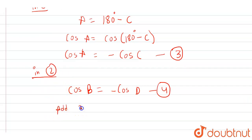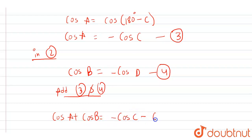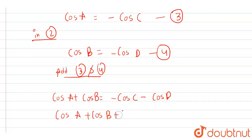Now let us add equation three and equation four. So on the LHS we'll get cos A plus cos B, and on the RHS we'll get minus cos C minus cos D. Now if we shift minus cos C and minus cos D to the LHS, they become positive, so we get cos A plus cos B plus cos C plus cos D equals to zero. This is what we needed to prove. Hence proved.